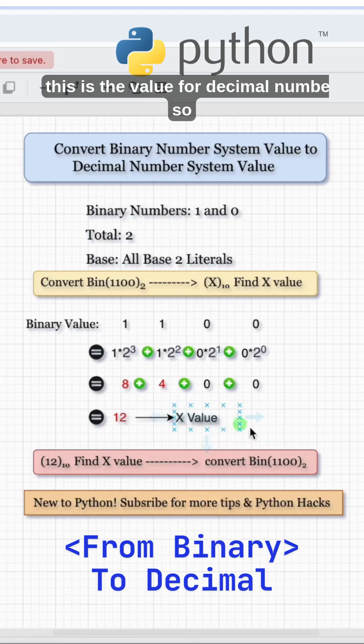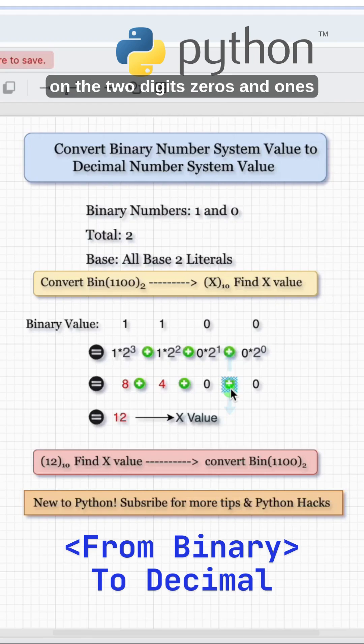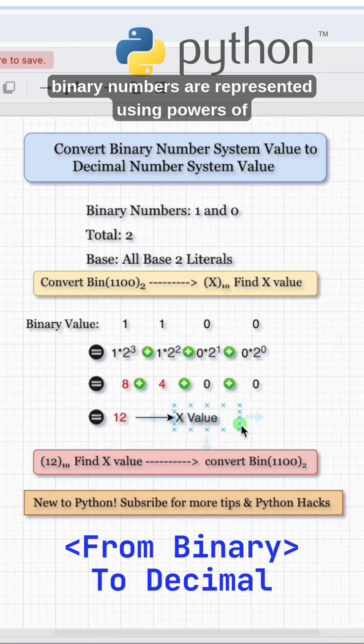This is how you convert. The number system is understood by humans and binary is machine readable, based on the two digits zeros and ones. Decimal numbers are represented using powers of 10, and binary numbers are represented using powers of 2.